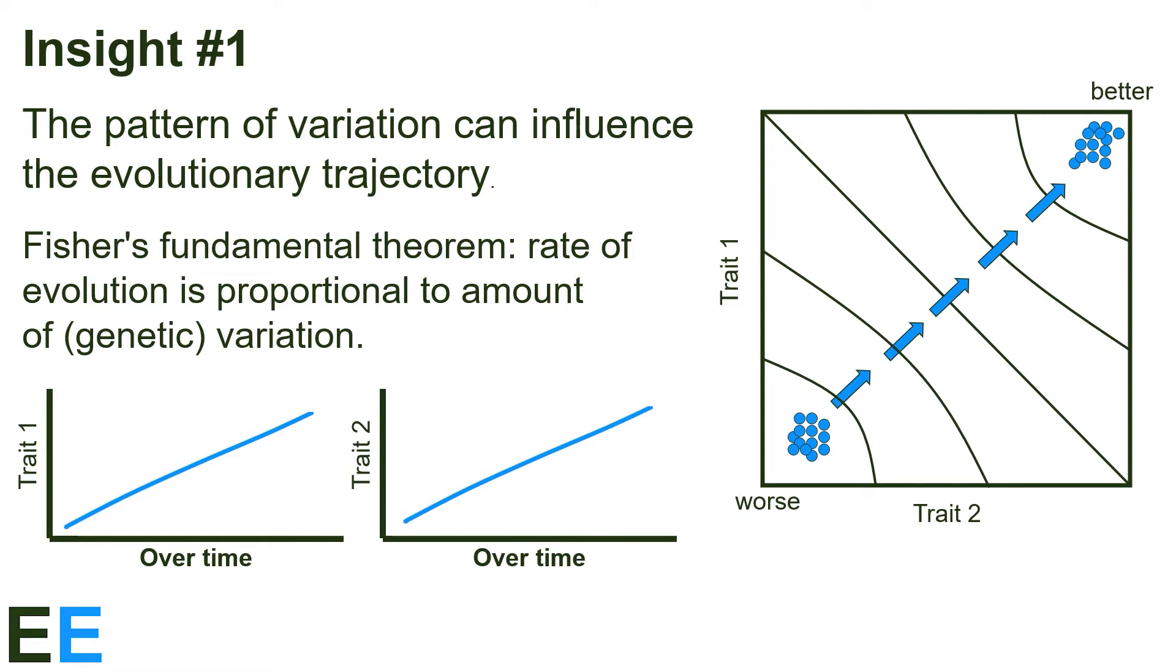Looking at the plots of the separate traits now, as the population evolves, both traits will increase together roughly equally.